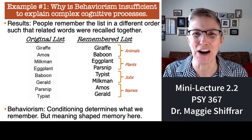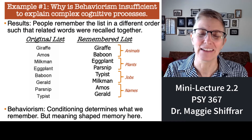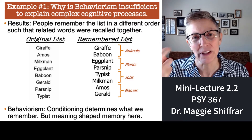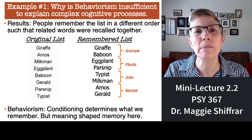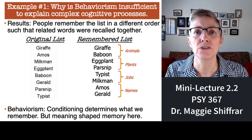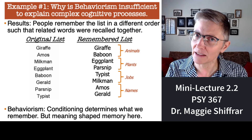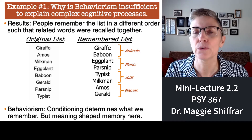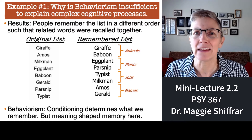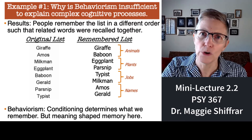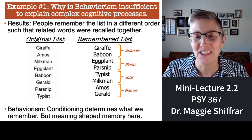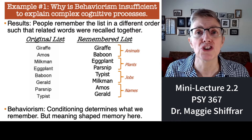Notice that animals tend to be grouped together, and plants tend to be grouped together, and jobs tend to be grouped together. I know these are old-fashioned jobs — it was an old-fashioned study, so I took the stimuli from the original study. It turns out that people naturally, when they try to remember things, use meaning to help them. They naturally group by meaning. We don't remember exactly what we saw or heard — we remember the meaningful interpretation of those stimuli. So behaviorism can't explain that. Memory for this list of words was shaped by meaning.